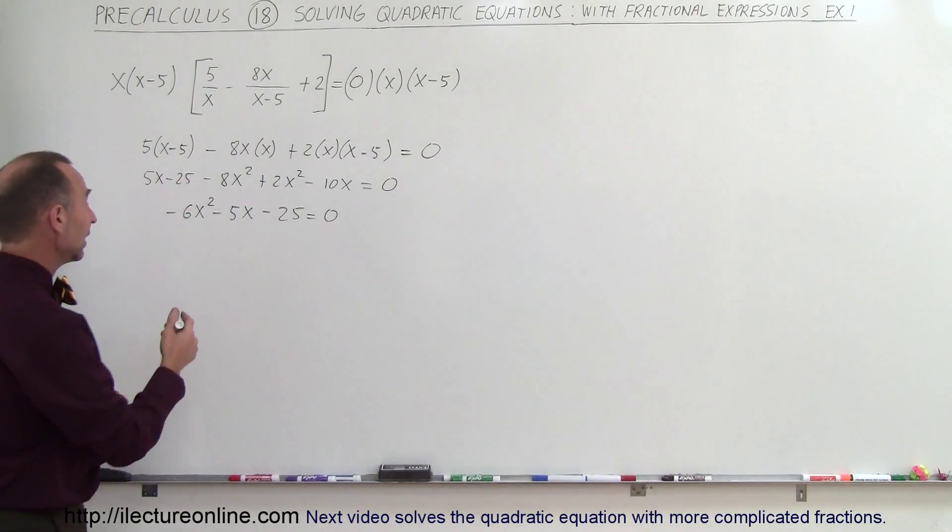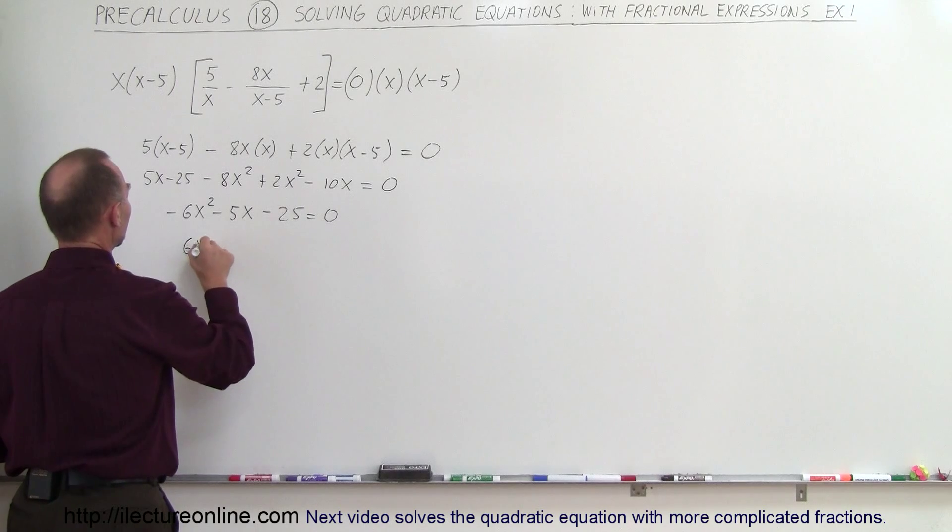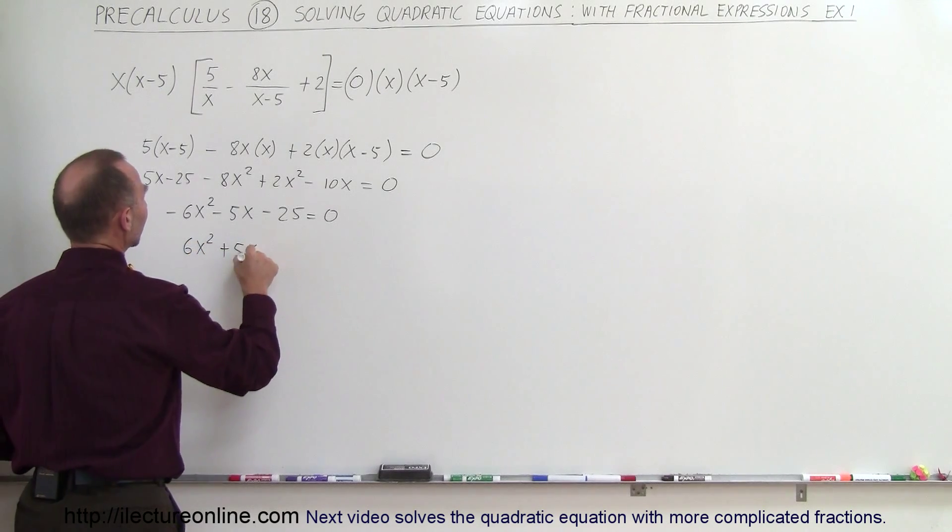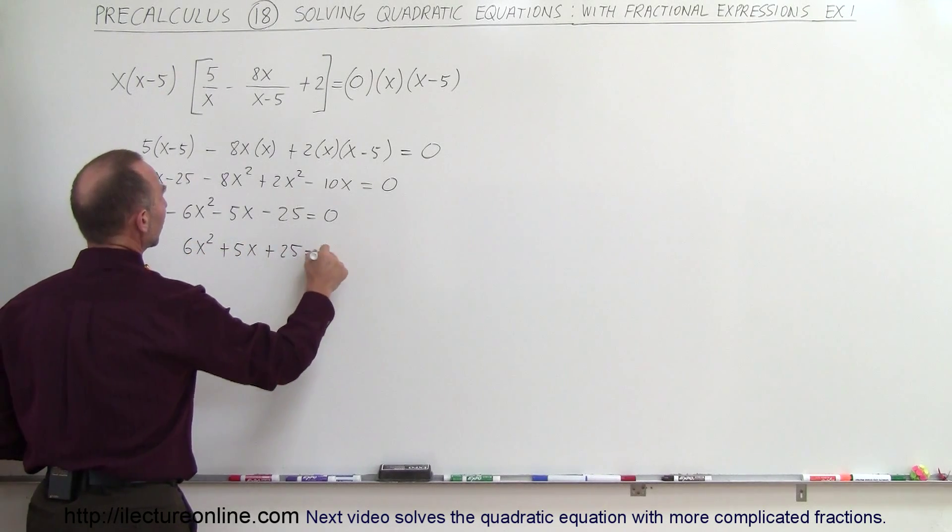And just to make things look a little bit better, let's multiply both sides by negative 1 to get rid of the negative signs. So we end up with 6x squared plus 5x plus 25 equals 0.